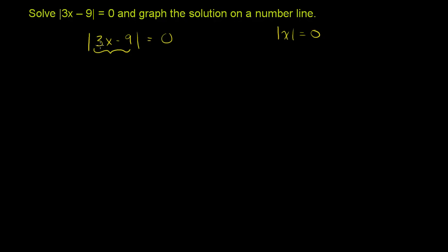So if I tell you that the absolute value of 3x minus 9 is 0, then we know that 3x minus 9 has to be equal to 0. And that's kind of unique about 0, is that it's the only number that's only the absolute value of 0.